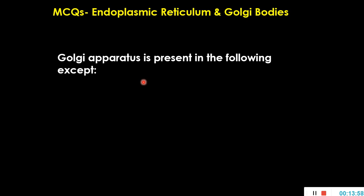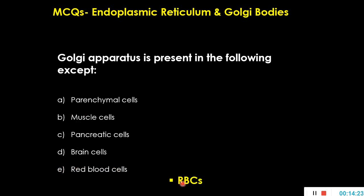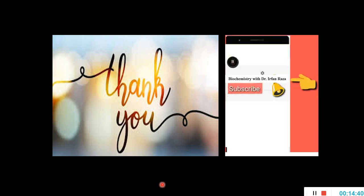The final question: Golgi apparatus is present in all of the following except — parenchymal cells, muscle cells, pancreatic cells, brain cells, or red blood cells? All the other cells listed are nucleated and must have endoplasmic reticulum and Golgi apparatus. Mature red blood cells are enucleated and have no cell organelles, so the right answer is red blood cells. Thank you very much, dear students. If you have any queries, text me in the comment box. If you are enjoying my videos, please subscribe and hit the bell icon to get the latest videos.